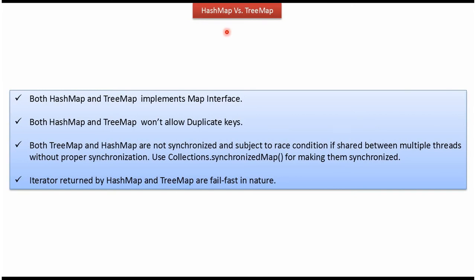In this video tutorial, I will cover the difference between HashMap and TreeMap. First, we will see the common things between HashMap and TreeMap. Both HashMap and TreeMap implement the map interface, and both won't allow duplicate keys. Both HashMap and TreeMap are not synchronized, so they cannot be shared between multiple threads. Iterators returned by HashMap and TreeMap are fail-fast.